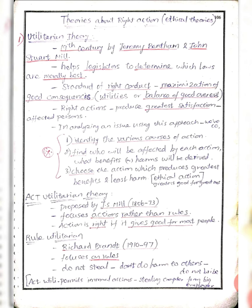Most importantly, the most ethical action is that which produces the greatest benefit. This is proposed by J.S. Mill, and he focuses mainly on actions rather than rules.